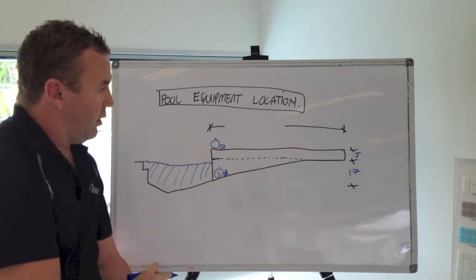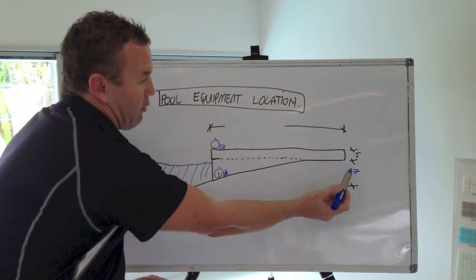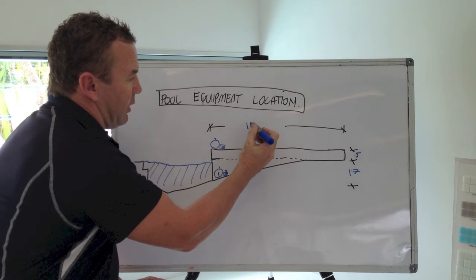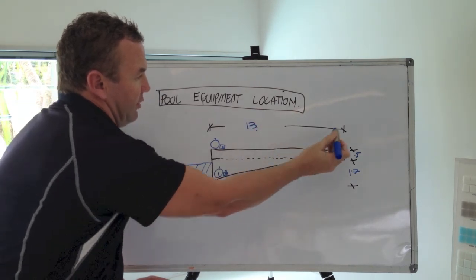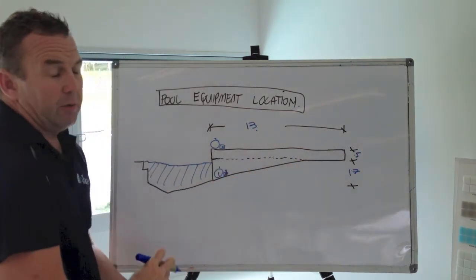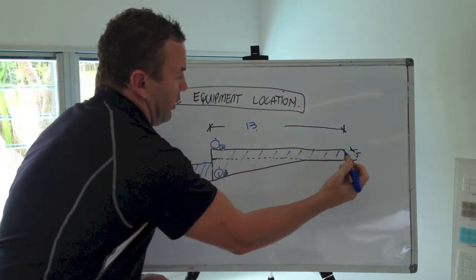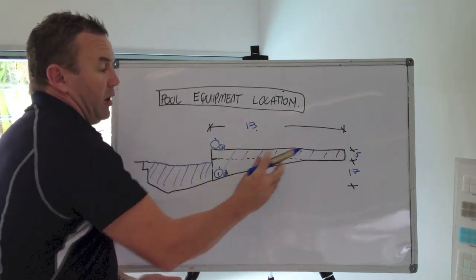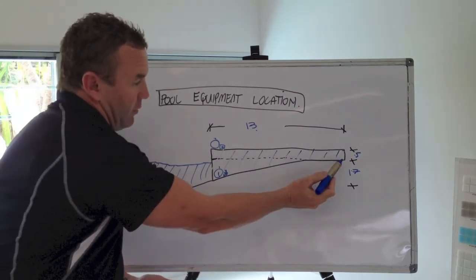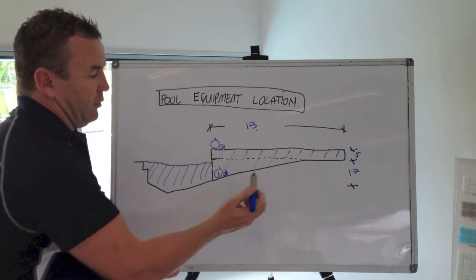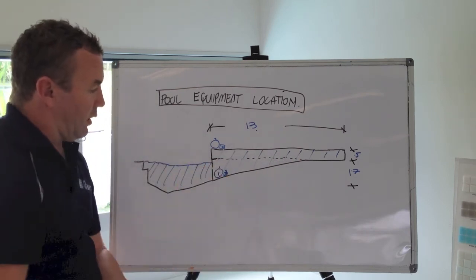The other question we haven't answered just yet - we know we can go 1.7 meters below, 0.5 meters above - is how far away. Typically we can go about 13 meters away from the pool, provided we're in this zone still. So we're in this zone, we can go up to 13 meters away, we can be 0.5 meters above the pool, and obviously the further away we get, the closer we want to get to the actual water level of the pool.